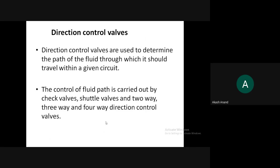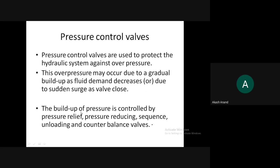Directional control valves are used to determine the path of the fluid through which it should travel within a given circuit. The direction of fluid flow — whether forward, backward, or stationary — can be controlled with these valves. Examples include check valves, shuttle valves, two-way, three-way, and four-way directional control valves.